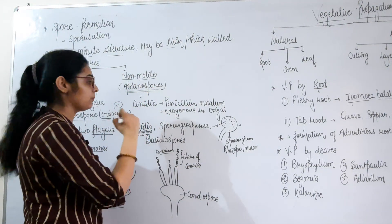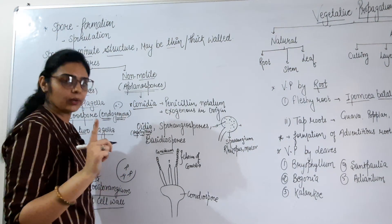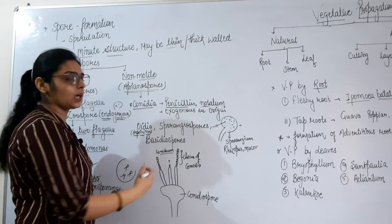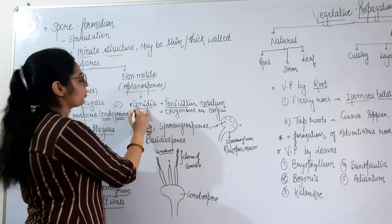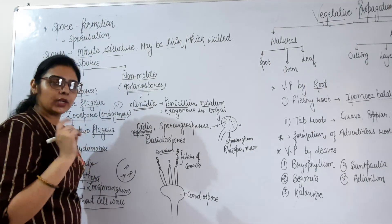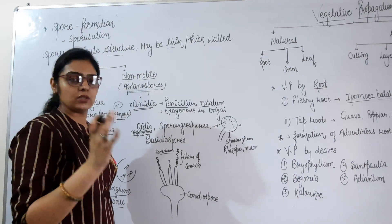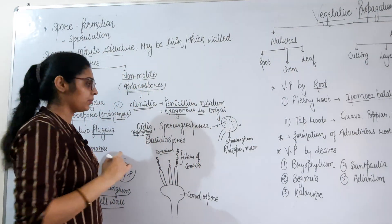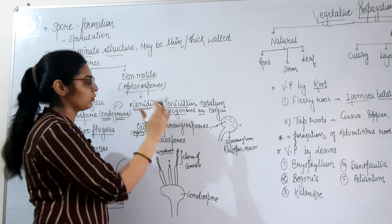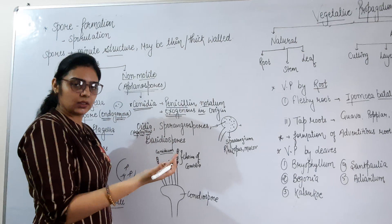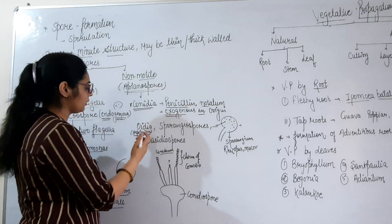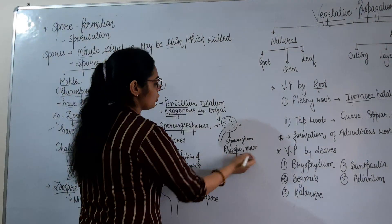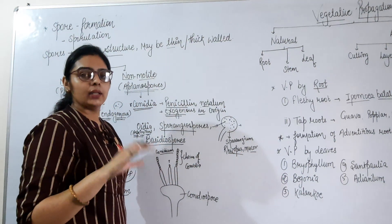For non-motile or aplanospores, the first example is conidia spores. Conidia is produced by Penicillium notatum, which belongs to fungi. Penicillium notatum is notable as the source of the first antibiotic — penicillin — discovered by Alexander Fleming. Conidia is exogenous in origin, meaning it is formed from outside. Next is Oidia, formed by Aspergillus. Then there are sporangiospores, formed by Rhizopus and Mucor, and basidiospores, formed by the Basidiomycetes class.